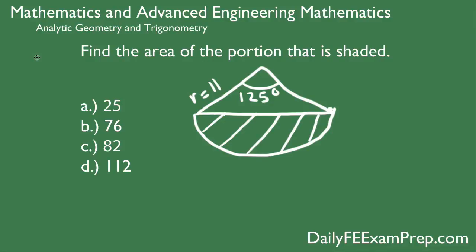Hey everybody, what's going on? It's Joel Irway with dailyfeexamprep.com. In today's video we're going to be talking about finding the area of a shaded portion of a circle given a radius and an angle. If you're following along with the general FE exam format, this is located under Mathematics and Advanced Engineering Mathematics, in particular the Analytic Geometry and Trigonometry topics. Let's get right to it.